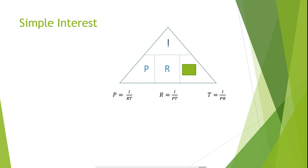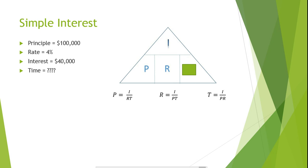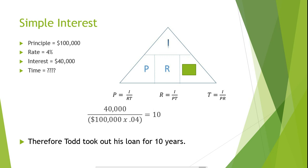Now let's try one more example, but this time let's solve for the amount of time the loan will be held for. Todd took out a loan for $100,000. The simple interest rate on this loan was 4%, and the total amount of interest Todd paid was $40,000. How long was the life of this loan? Since we're solving for the life of the loan, our formula will be T equals I divided by PR, or time equals interest divided by principal times the rate. So if we plug in our figures, our formula would be 40,000 divided by 100,000 times 0.04, resulting in 10. Therefore, Todd took out his loan for 10 years.